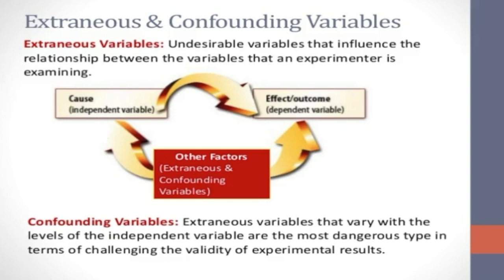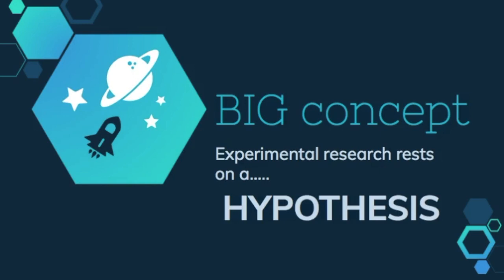Experimental researchers hope to control for confounding variables and also increase internal validity. The problem with extraneous variables is that they might affect the dependent variable, but they might not — there's no way to tell until after an experiment is done. After defining independent and dependent variables, experimental researchers look to forming a research hypothesis. A hypothesis is an educated prediction that provides an explanation for an observed event. An observed event is a measurable result or condition. Operationalizing a variable means finding a way to measure it or quantify it.